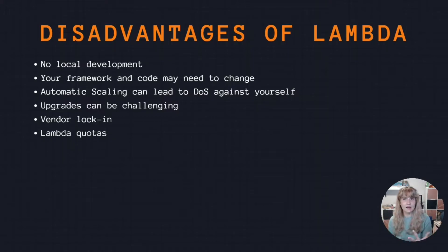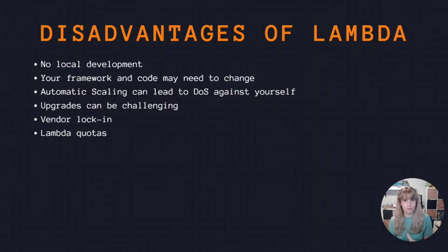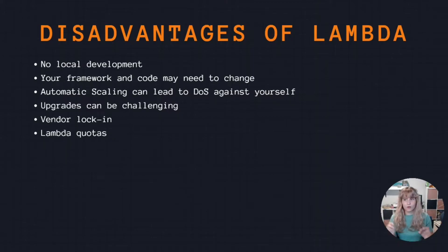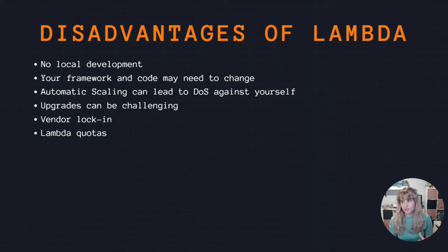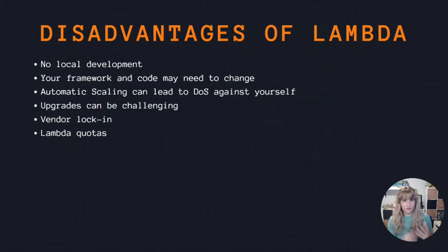The pain of no local development is compounded by the lack of traditional debugging tools. With Lambda executions on AWS, there's no way to run a traditional debugger where you can step through code and set breakpoints. Cloud logs are pretty much your only option for debugging — a big contrast to local dev where you can simply look at your terminal and see what's going on.